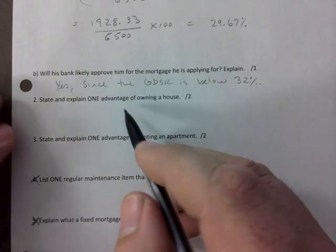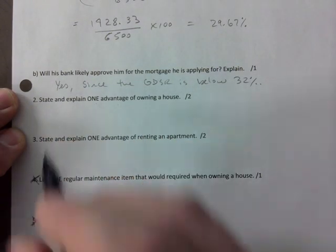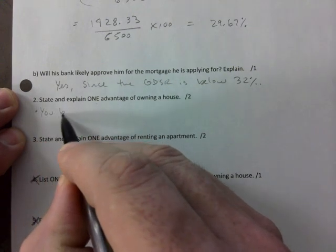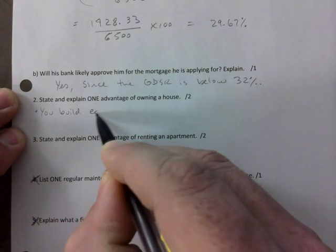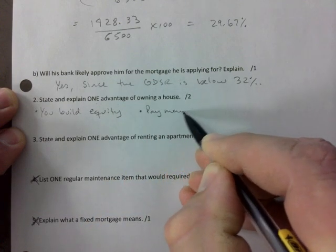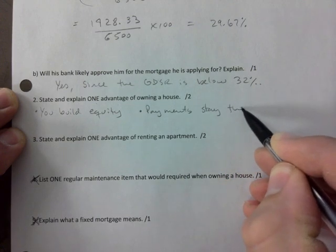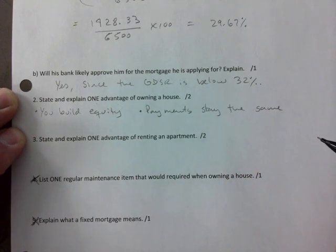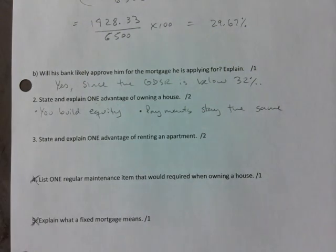I did say for two and three to do one advantage of owning a house. You build equity, that's a big one. Payments stay the same. Anybody have something different? Okay, yeah, you can renovate at will, you may own pets, you can stay as long as you want.